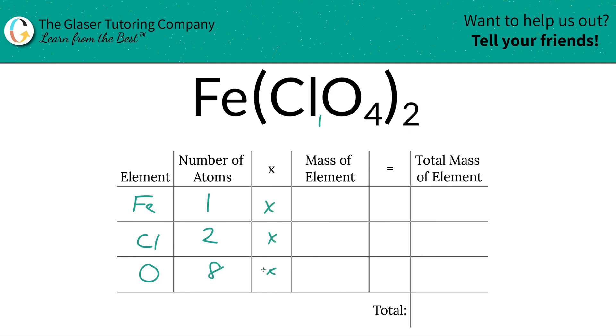Then what you're going to do is you're going to multiply those number of atoms by the mass of the element. Where do we find that? Periodic table? You got it.